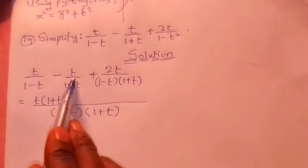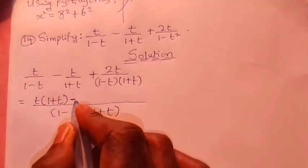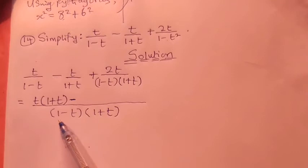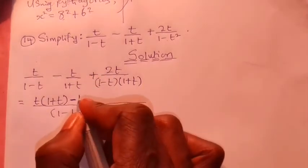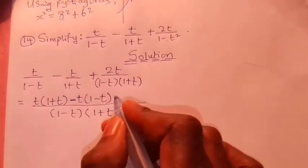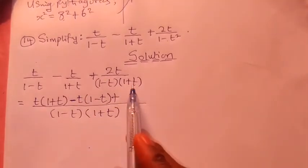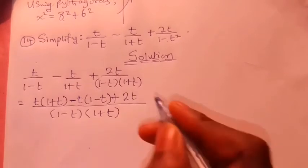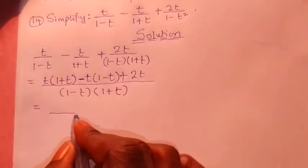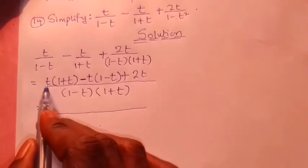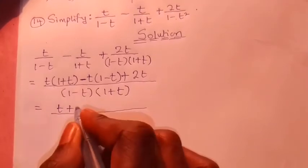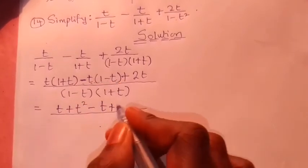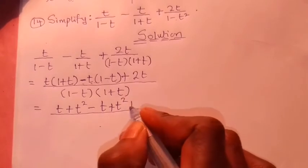We write the minus sign and do the same for the second fraction: (1 + T) cancels, leaving (1 − T) multiplied by T, giving T(1 − T). Then we bring in the plus and for the third fraction, both denominators cancel, leaving 1 multiplied by 2T. Expanding the brackets: T(1 + T) = T + T², and −T(1 − T) = −T + T², then plus 2T.